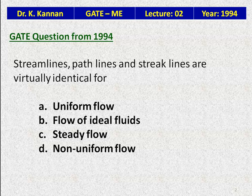For steady flow, the properties are constant with respect to time. For uniform flow, properties are constant with respect to position, and for non-uniform flow, they vary with position. Ideal flow is very hypothetical. The correct answer is steady flow — for steady flow, the streamline, path line, and streak lines are virtually identical.